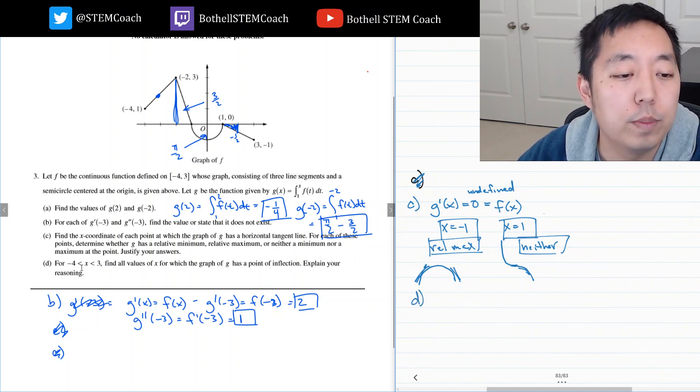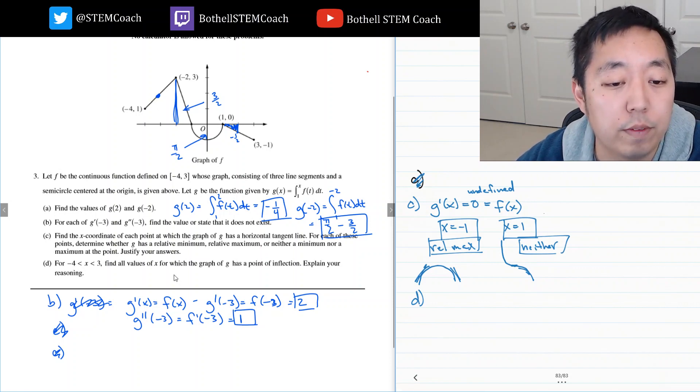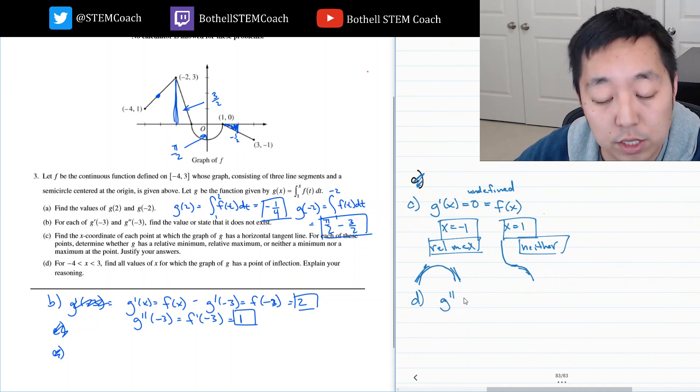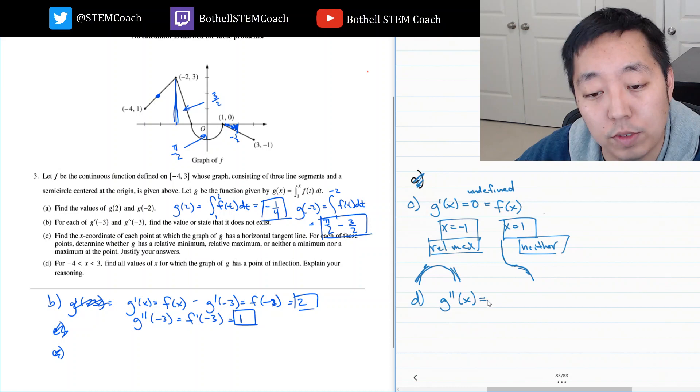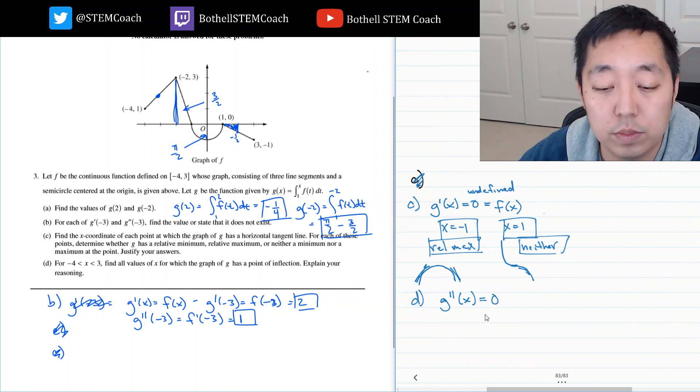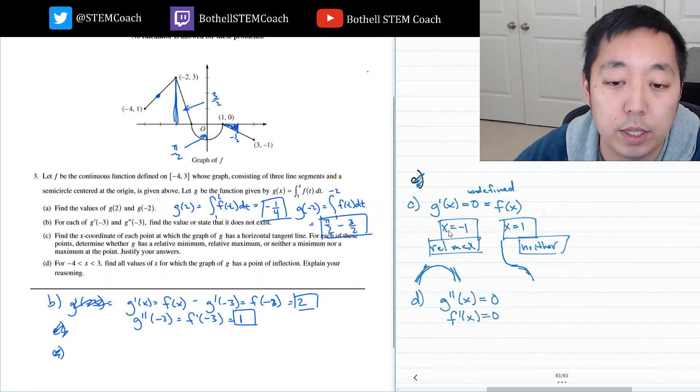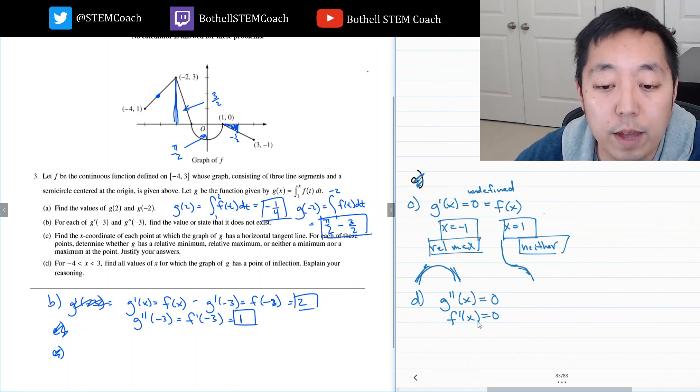For between negative four and three, find all values for x where the graph of G is a point of inflection. Point of inflections are where the concavity changes. Concavity can change when the second derivative is equal to zero. Those are candidates, those are my critical numbers. So, that's the same as F prime of x is equal to zero. Because G prime of x equals F of x. F prime of x equals zero or undefined.